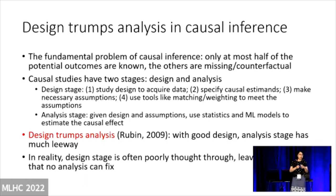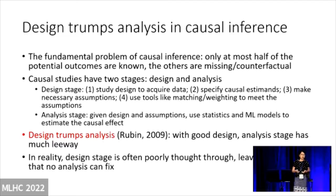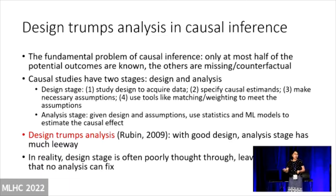The design stage involves anything to do with data before you look at the outcomes. The analysis stage is: given the design stage and the assumptions, you use statistics or machine learning models to analyze the data and estimate causal effects. Don Rubin in 2009 had this famous saying, which I completely agree with: for causal inference, design trumps analysis. If your design is good, then even if you use the simplest analysis — like just comparing two groups, difference in means — you're good. In fact, we can prove that in a randomized experiment, even if your model is wrong, you can still get a consistent estimate.